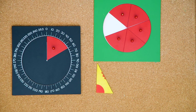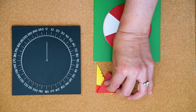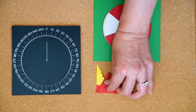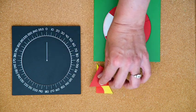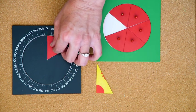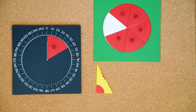1 sixth is 60 degrees. Now you know this in your brain. Is 60 degrees bigger or smaller than 90 degrees? 60 is smaller than 90. And we can prove that with our angle measure.